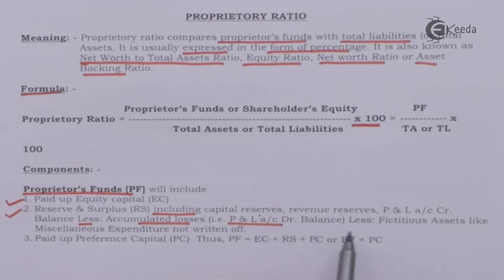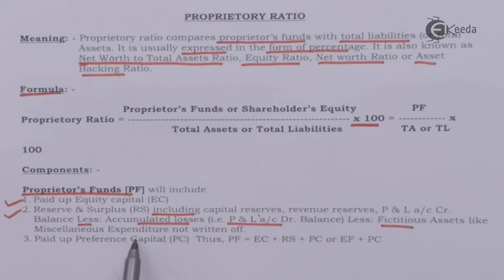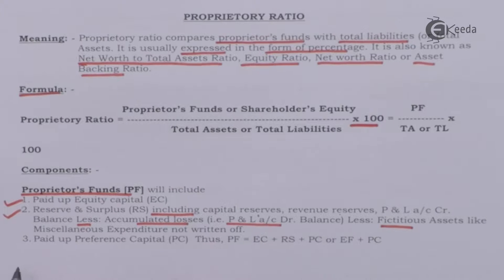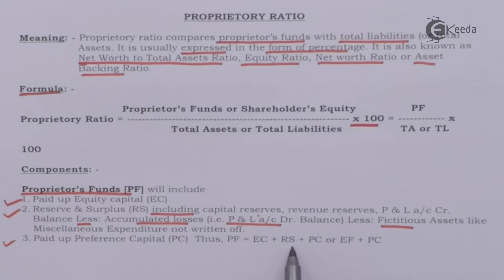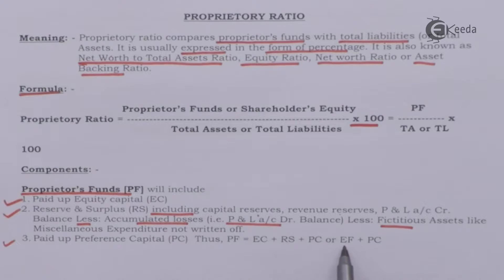Less accumulated losses, that is profit and loss account debit balance. Fictitious assets are deducted, such as miscellaneous expenditure not written off. Also included is paid-up preference share capital. Thus, proprietors' fund equals equity share capital plus reserves and surplus plus preference share capital, or equity shareholders' fund plus preference share capital.